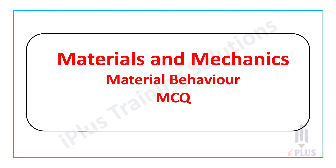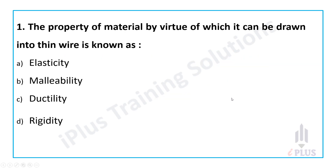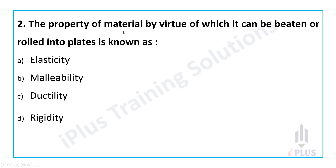Welcome back to I Plus video lectures. We will discuss MCQs based upon material behavior. First question: the property of a material by virtue of which it can be drawn into thin wires — very important property. Options: elasticity, malleability, ductility, rigidity. The answer is ductility.